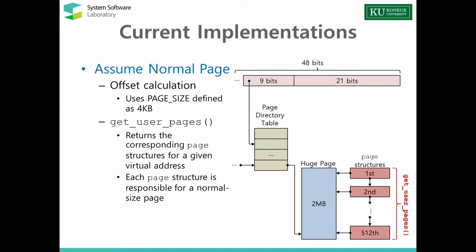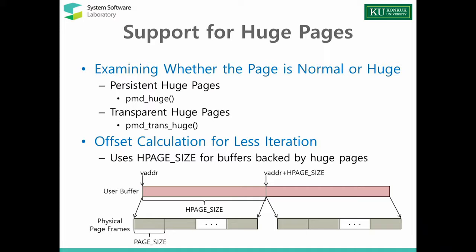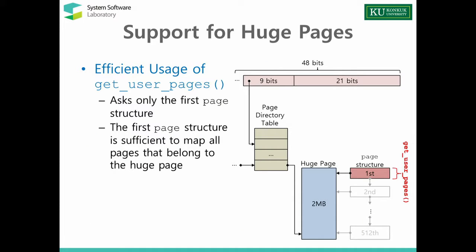To resolve this problem, we modified LIMIC. First, we distinguish huge pages from normal pages using macro functions. If we encounter a huge page, we calculate the offset using the actual page size. We also changed how we use get_user_pages — now we only obtain the first page structure, which we found is sufficient to map the whole huge page, because these are physically contiguous and mapped to the low memory area of the kernel virtual address space.